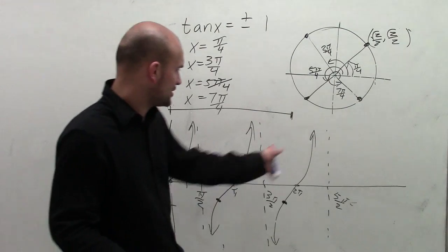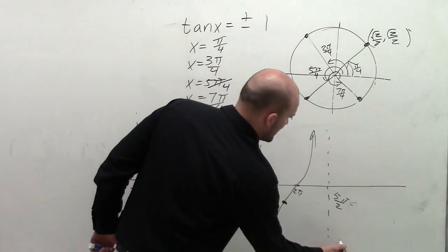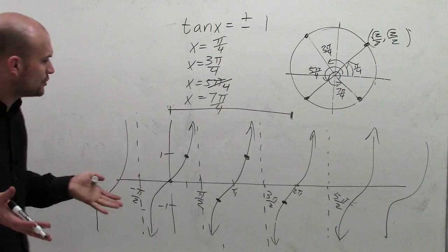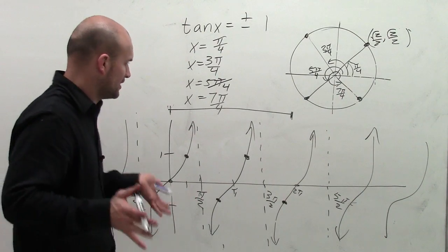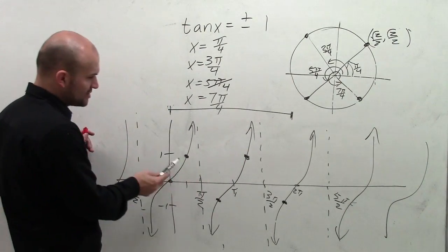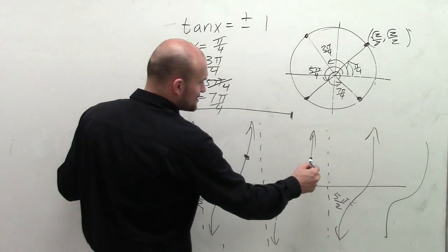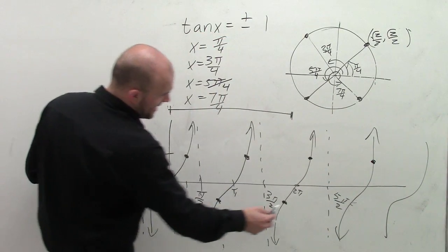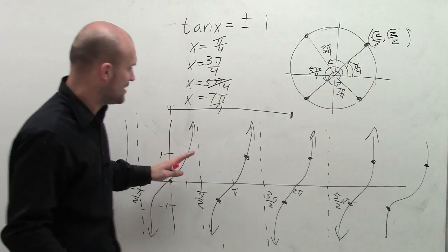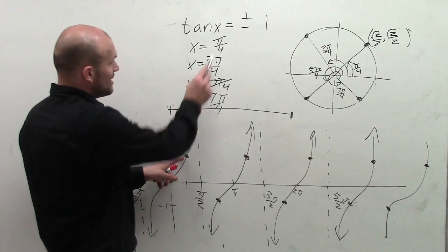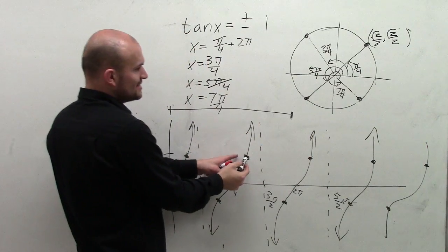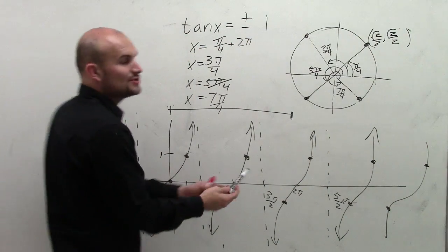What about the solutions that continue on outside of 2 pi — when the graph continues in the positive or negative direction? How do we rewrite every single one of those solutions? One thing to notice is these solutions keep on repeating, because whenever the graph crosses at 1 or at negative 1, we have a solution. You could say: if I just keep adding 2 pi to my original answer pi over 4, I get the next solution, and adding 2 pi again gives the one after that.